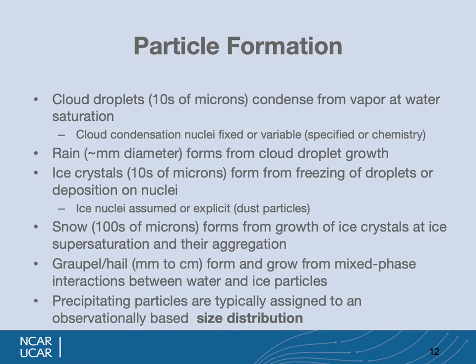In microphysics we have to deal with how particles form in various conditions. Cloud droplets form from condensation of vapor at water saturation. Cloud condensation nuclei can affect this, and some schemes allow those to vary depending on pollution level, or chemistry can provide CCN — but often it's a fixed number, which gives a particular size of cloud droplets. Rain of millimeter diameter forms from cloud droplet growth and also grows by accreting cloud as it falls. Ice crystals are tens of microns and form from freezing of droplets or deposition onto ice nuclei — at cold enough temperatures at ice saturation you can produce ice crystals from deposition onto nuclei.